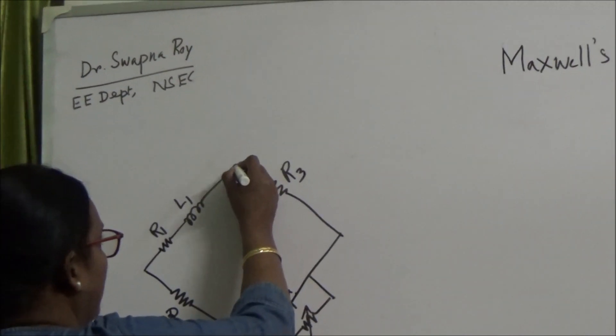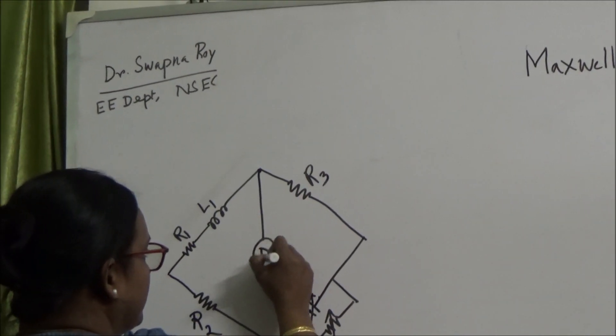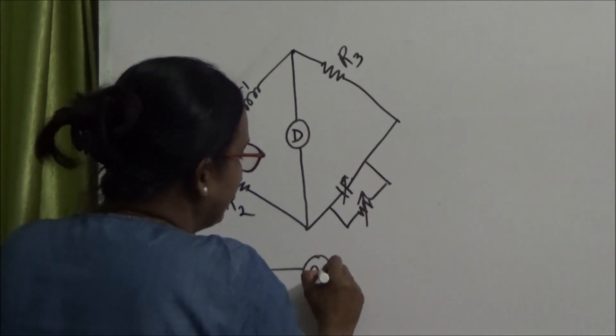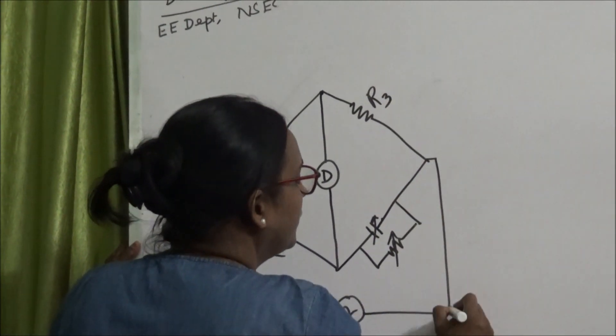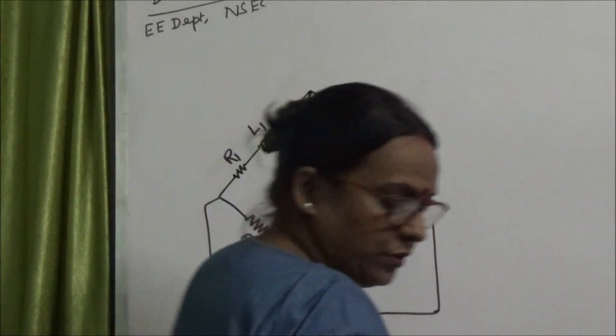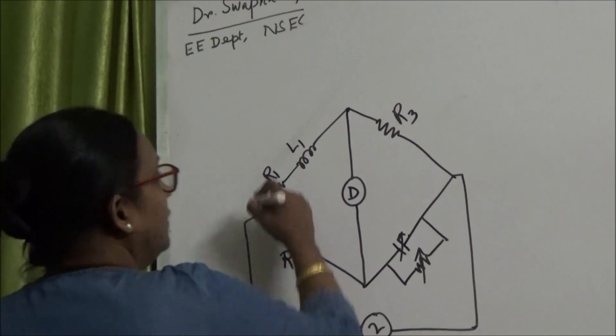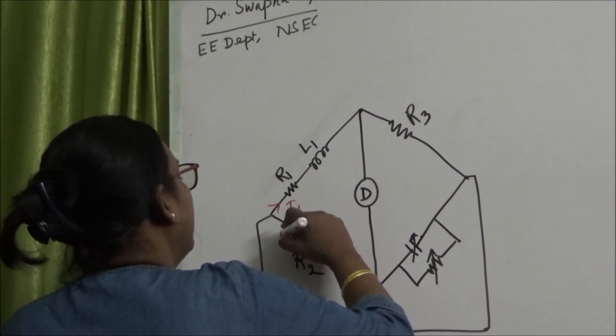And here we can see one capacitance and one resistance connected in parallel. At this point the detector is connected and the supply is AC. So this is my I1 current and this is my I2 current.